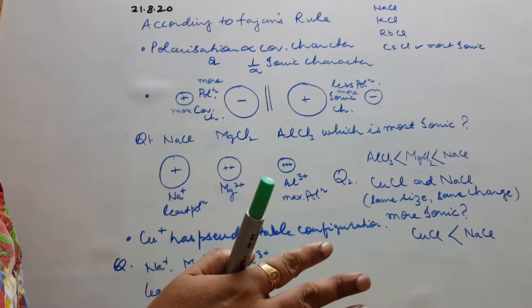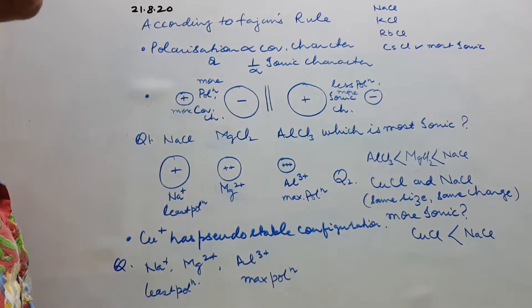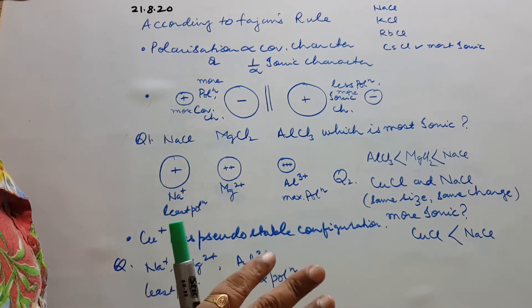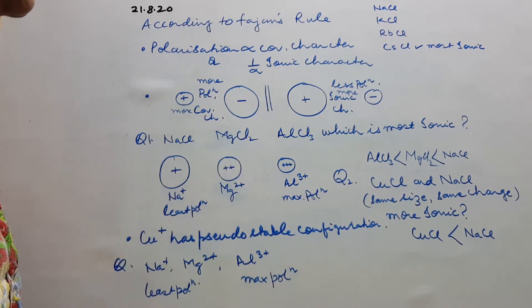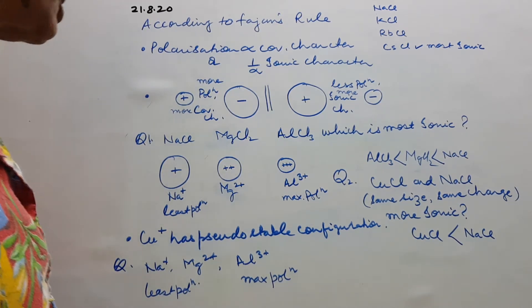How will you answer? There are some other factors also with the help of which you can answer, but if they ask you explain in terms of Fajan's rule, sometimes they specify also. And they say, array them in increasing order of the ionic character with reason. So children,